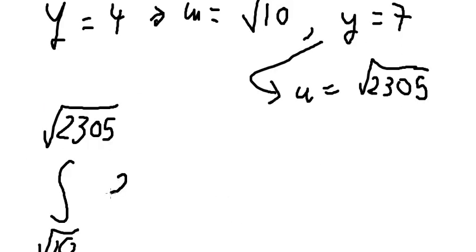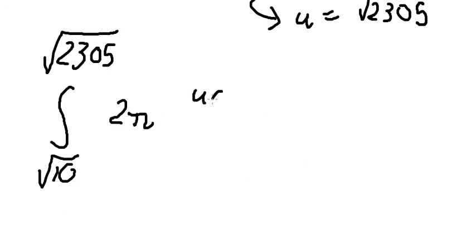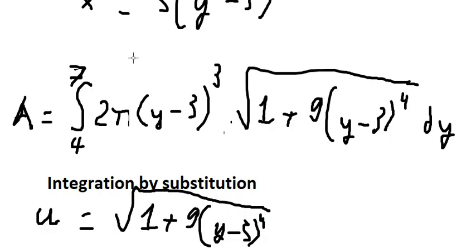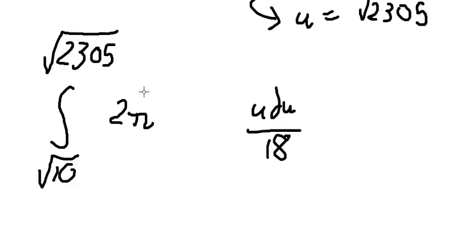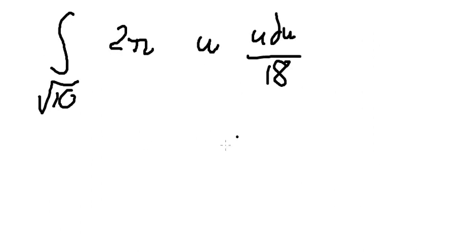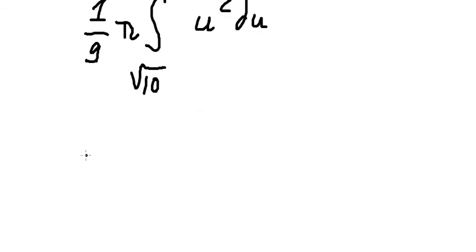We substitute into the integral. The term (y minus 3) cubed dy is replaced by u du over 18, and the square root is replaced by u. After simplifying, 2 divided by 18 gives 1 over 9. So we have the integral from square root of 10 to square root of 2305 of u squared du, multiplied by 1 over 9.